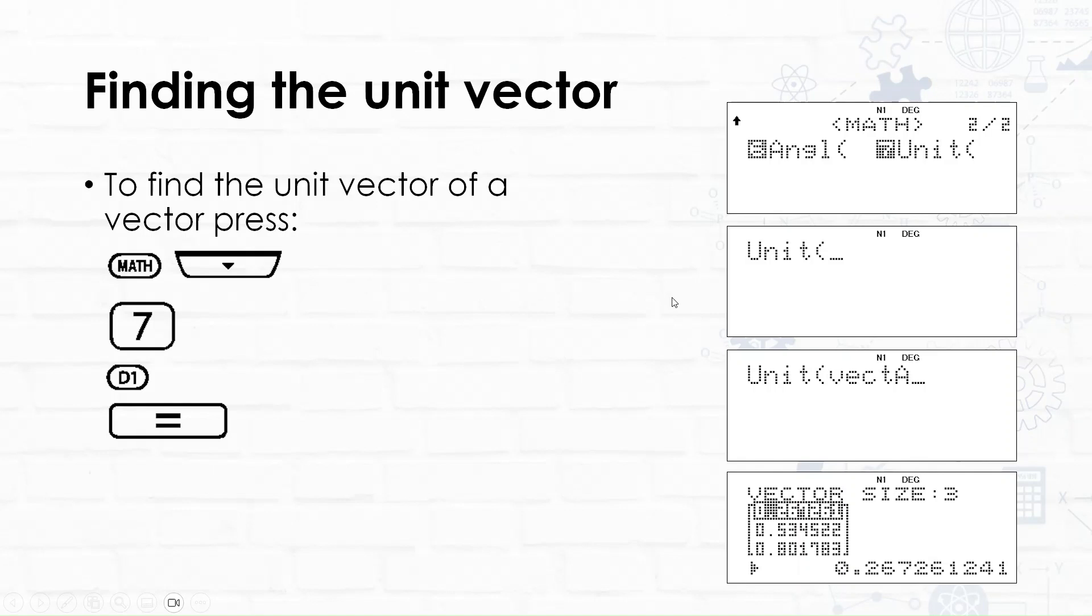Finally, let's find the unit vector. To find the unit vector, we're going to press math, and then we're going to choose 7, and press d1 for our vector that we want to find the unit value of, and then equals, and we'll see that we get our vector A unit vector. This is just basically scaling the vector to a particular size.